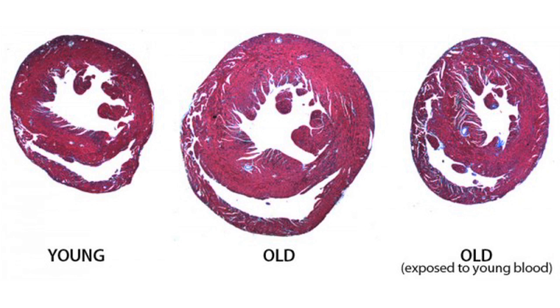What parabiosis and GDF-11 do isn't simply slow or stop aging. They turn back time, actively making mice younger.